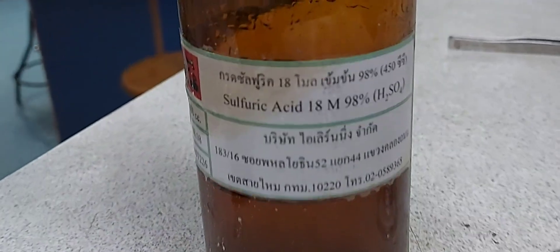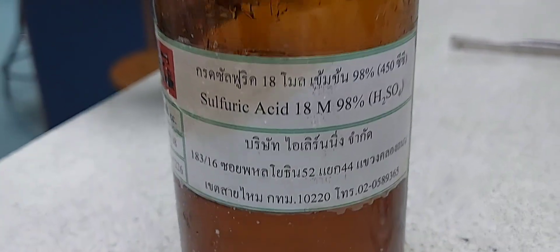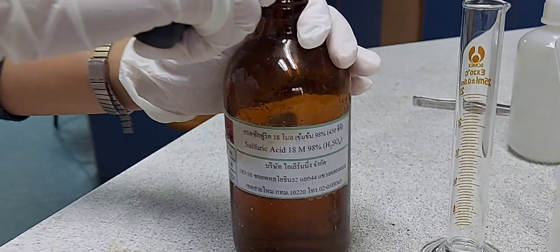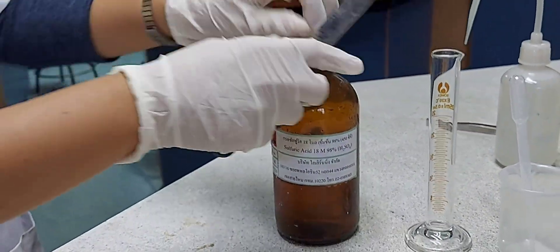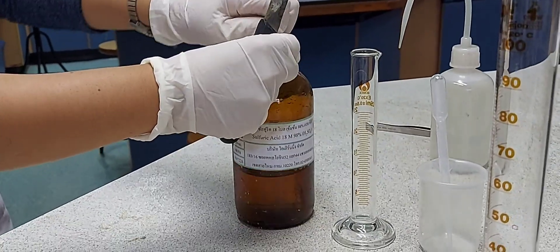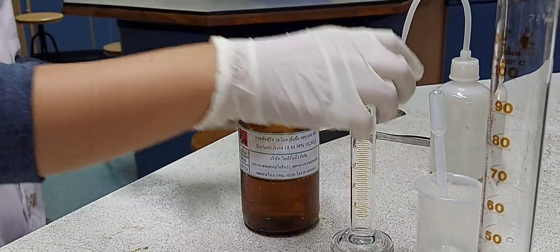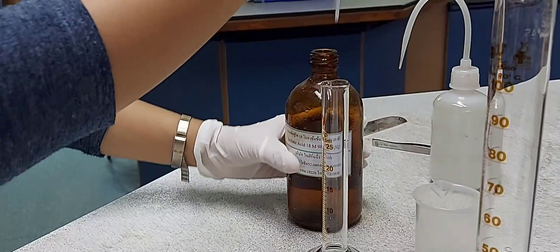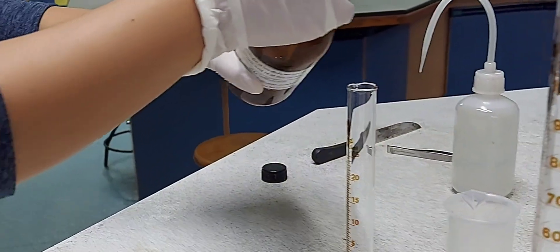Hello everyone, here in this experiment I am going to show you how to go about diluting concentrated sulfuric acid. I'm taking 18 molar concentrated acid and diluting it to 1.5 molar.